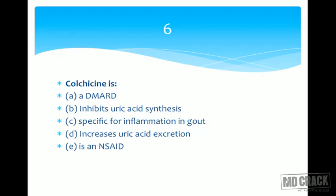The last option — colchicine is an NSAID — can be ruled out easily since colchicine does not appear among the NSAIDs. We now have three options: inhibits uric acid synthesis, specific for inflammation in gout, and increases uric acid excretion. Inhibiting uric acid synthesis involves acting on xanthine oxidase to prevent conversion of hypoxanthine to xanthine to uric acid.